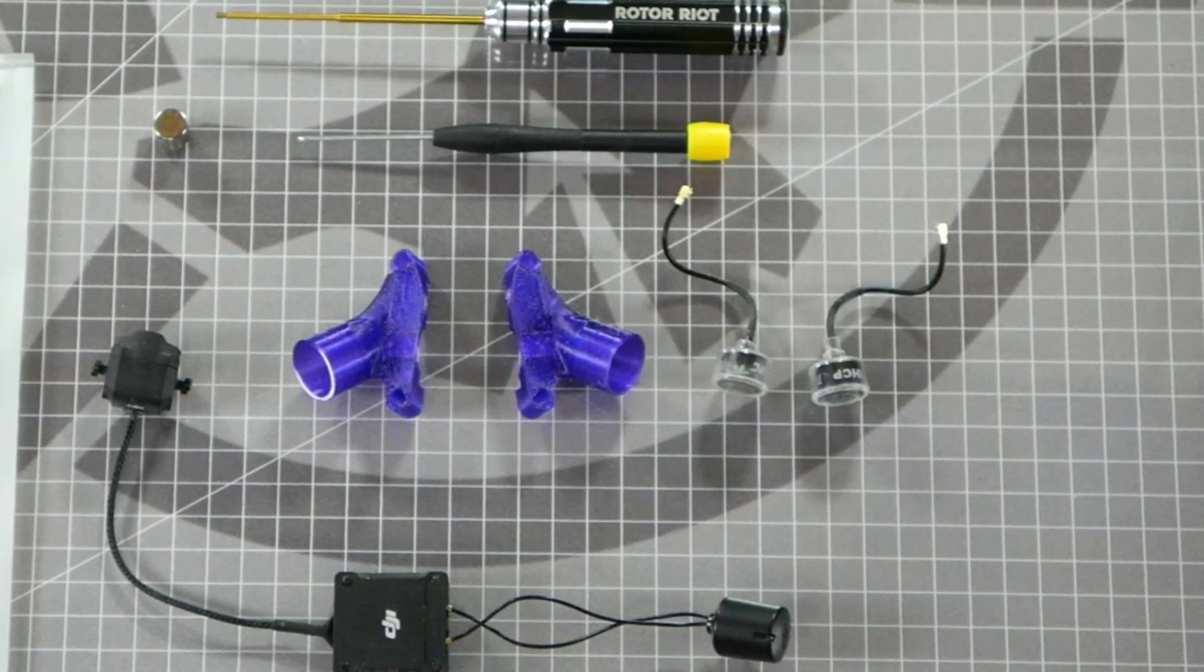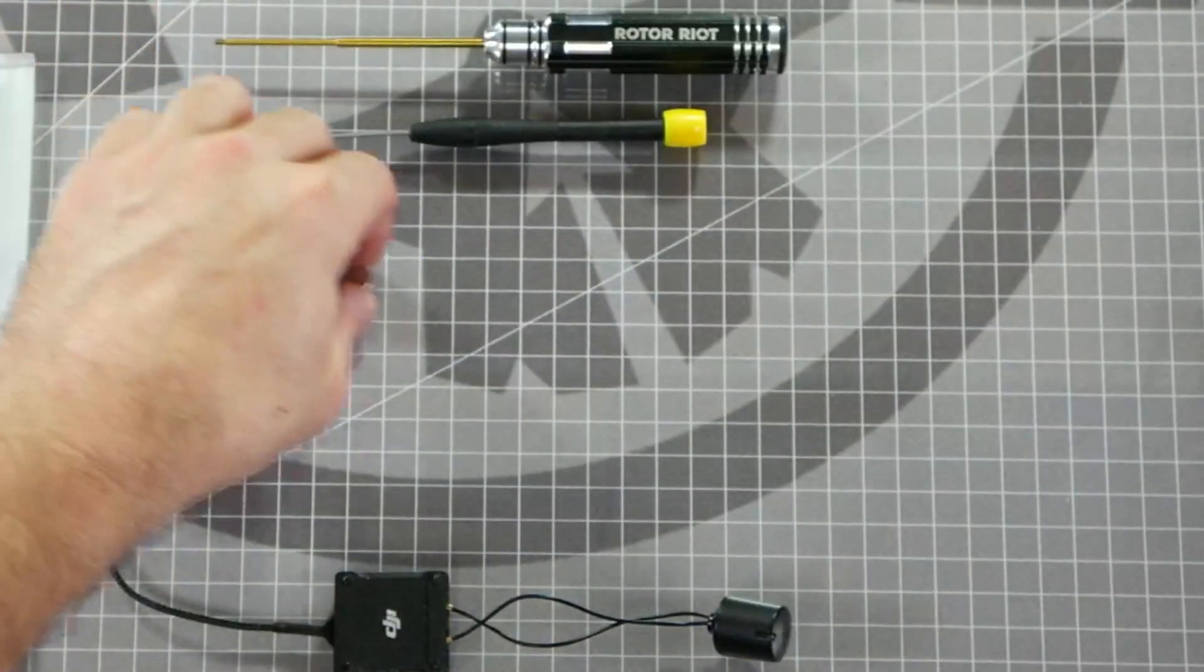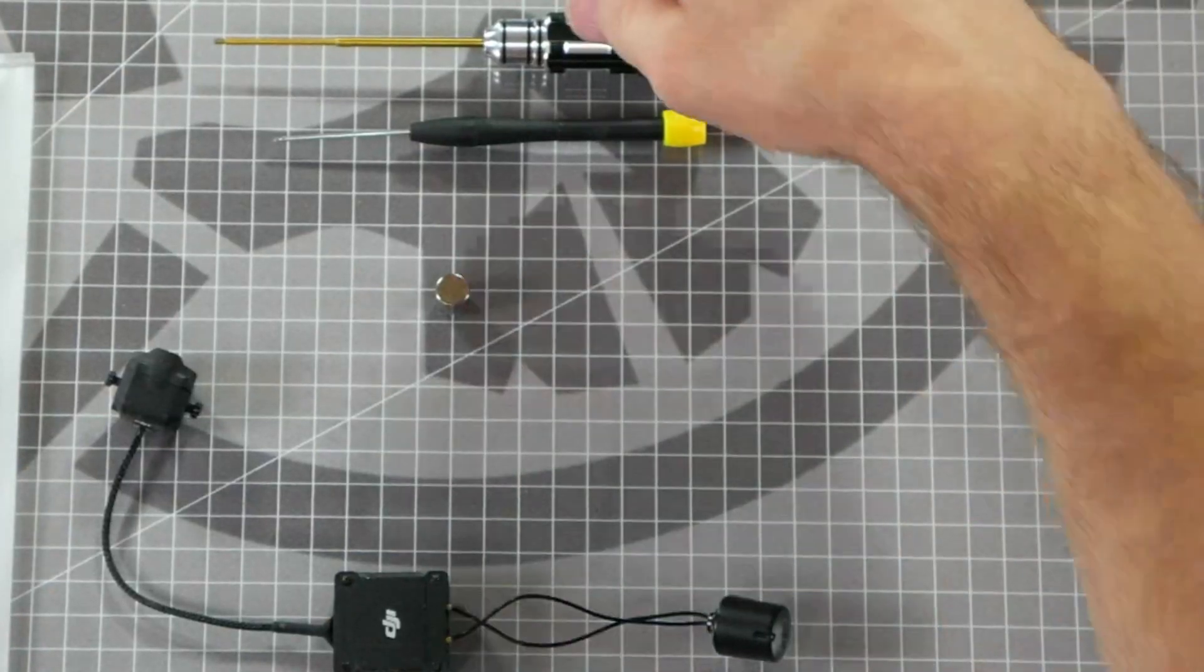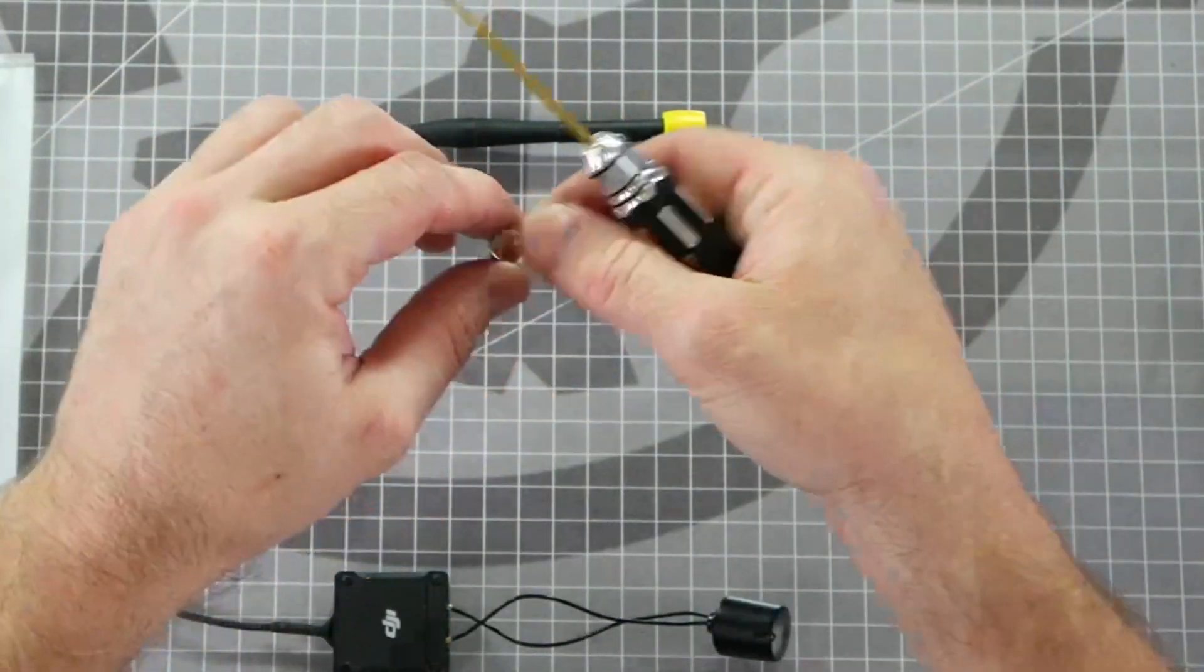The tools you will need for this are a tiny Phillips head screwdriver and a two millimeter hex driver. I like to use a magnet to hold all my screws so I don't lose them. It's also really good to magnetize your tools to help you with removing the screws.